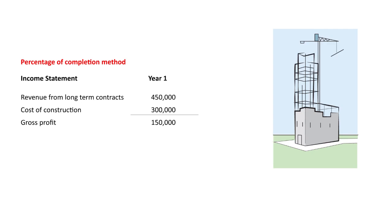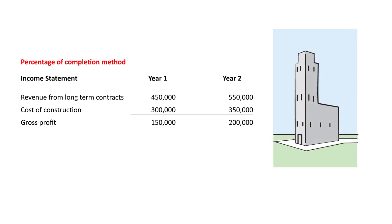At the end of year two, we would show the balance of the revenue as we completed the project. That balance of revenue would be $550,000, minus the additional cost — which could be different than the anticipated amount — which is $350,000 in this example, and therefore gross profit would be $200,000. Percentage of completion is used when profit is reasonably estimatable and there is a reliable measure of progress towards completion.